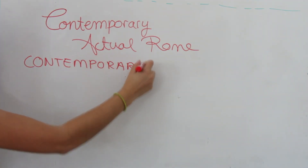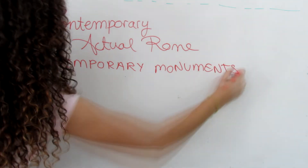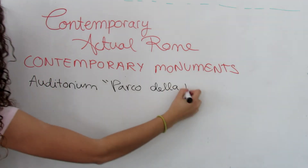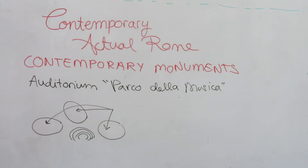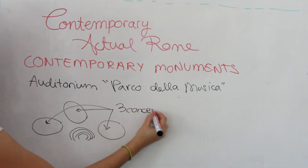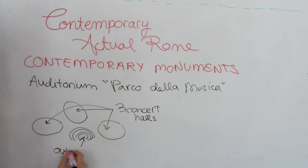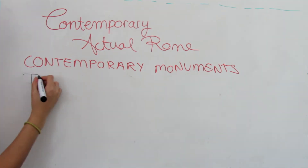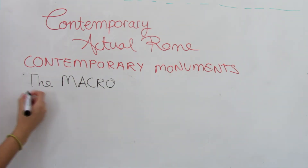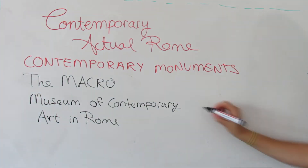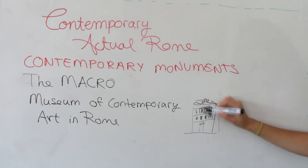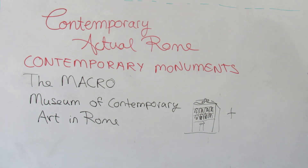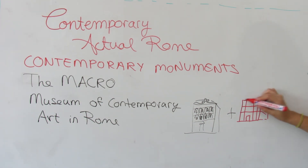Contemporary monuments are dedicated to arts and museums. The most important ones are the Auditorium Parco della Musica, with three concert halls and an outdoor plaza by Renzo Piano. The MACRO is the Museum of Contemporary Art in Rome by Odile Decq, which combines the old building with modern and colorful shapes.